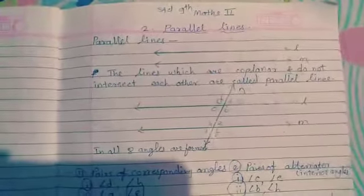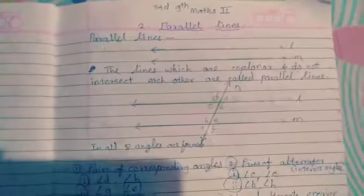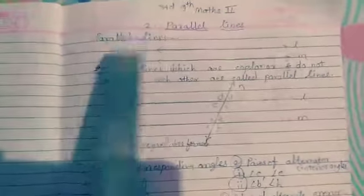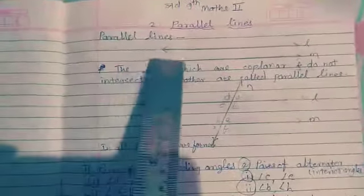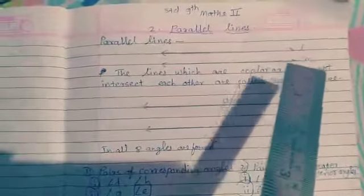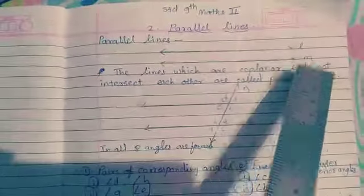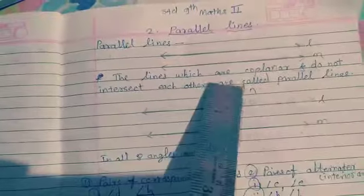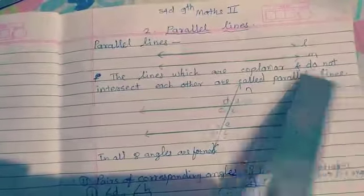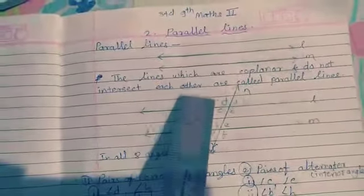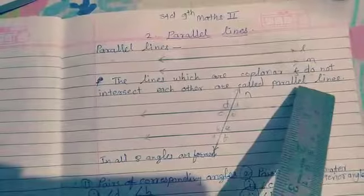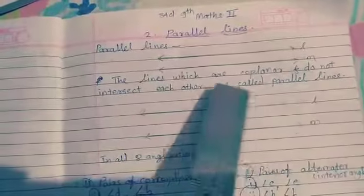Welcome to the next video of Standard 9, Math 2, Lesson No. 2: Parallel Lines. Here, line L and M are two parallel lines. The lines which are coplanar and do not intersect each other are called parallel lines.